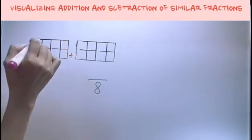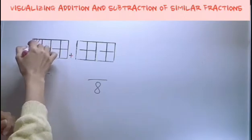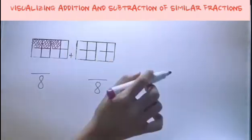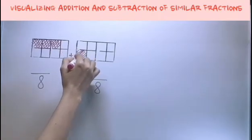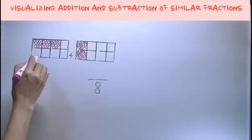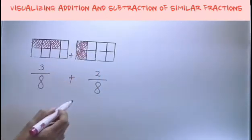One whole divided into eight. Now, let's say there's a plus sign. What you should consider are the shaded ones only. Three and two. So add them.